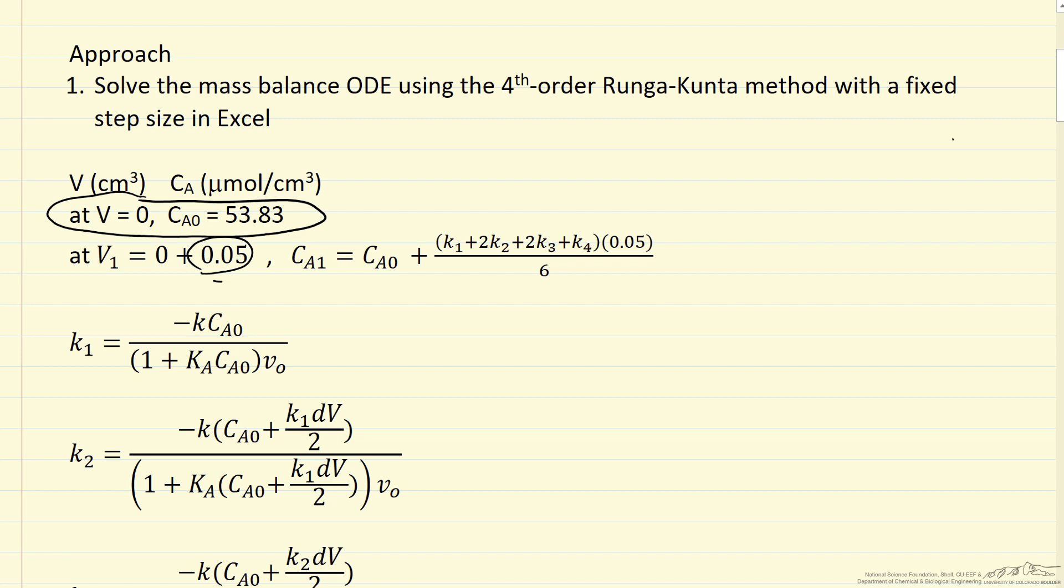And then these four parameters K1, K2, K3, and K4 that we calculate, multiplied by our step size—this is DV—and then divided by six, where these K terms are the rate expression.